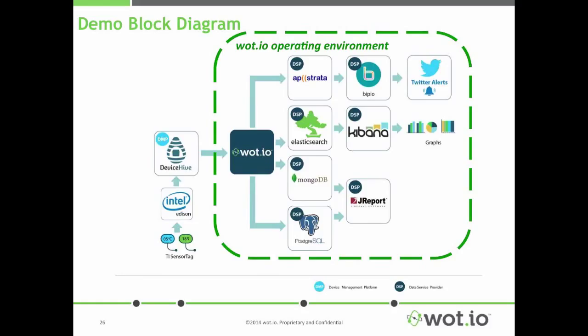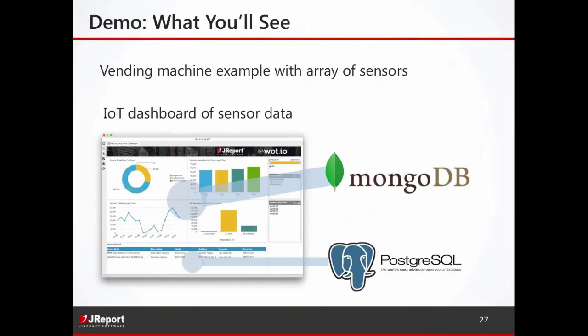Thanks, Mitchell. Drilling down to J-Report a little bit more — Mitchell mentioned they're using MongoDB and Postgres for this demo. What you'll see is a dashboard that lets you visualize the IoT data. The top four components will come from data in MongoDB, and the bottom table will come from Postgres. I'm going to turn control over to Jim, and he's going to show you a vending machine example with an array of sensors. While I'm doing that, I'd like to put up a couple of polling questions for you guys to answer. The first question is: are you actively searching for a reporting solution?